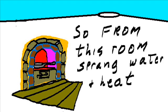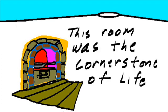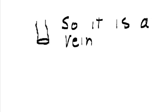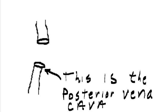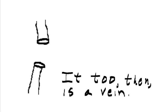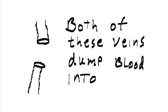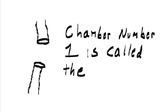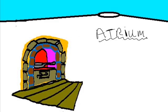So from this room sprang water and heat. This room was the cornerstone of life. Now, this is the anterior vena cava — it brings blood into the heart, so it is a vein. This is the posterior vena cava — it also brings blood into your heart. These are the first veins that bring blood into the first of four chambers in your heart. Chamber number one is called the atrium.